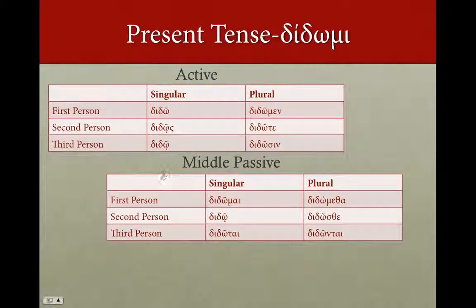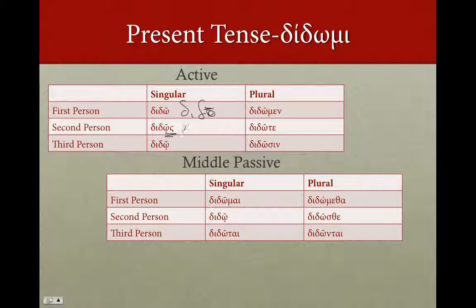And then finally, didomi. The stem here is going to be dido, and it's a longer o sound. So dido, didos, dido — contracting slightly differently. You keep that long o there. Dido, didos, dido, didomen, didote, dosin. And in the middle passive: didomine, dido, didota, didomine, didos, didota. That strong o stays throughout — a long o.